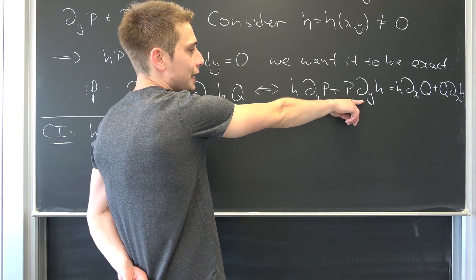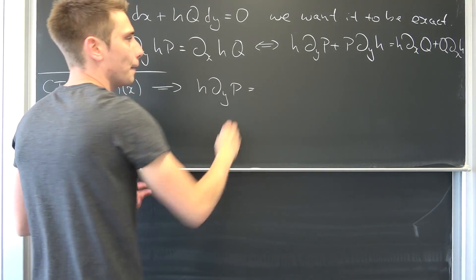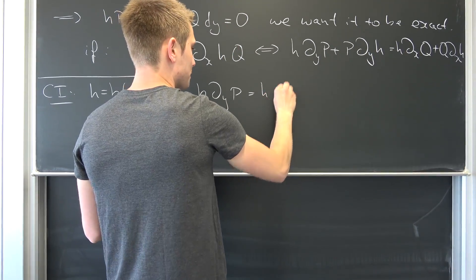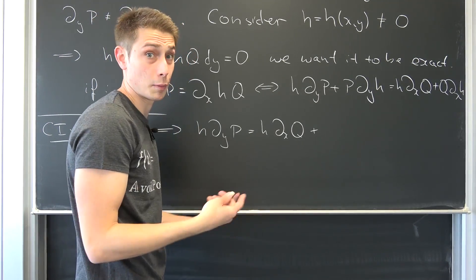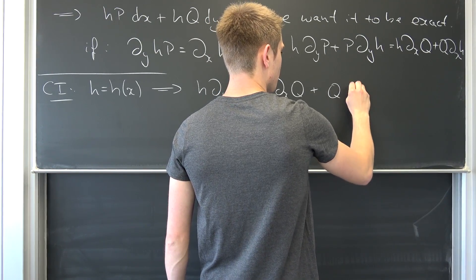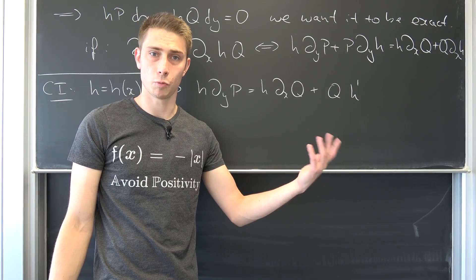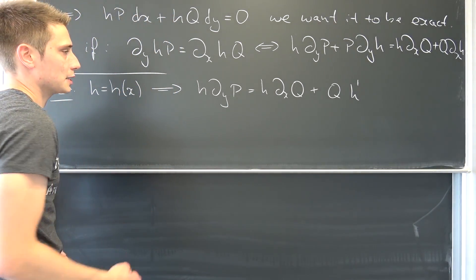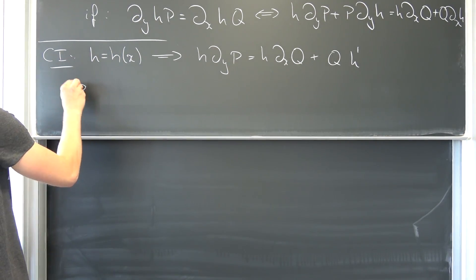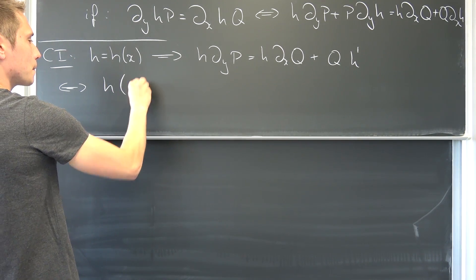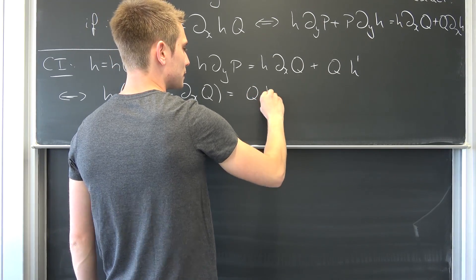If we differentiate H with respect to y, this is going to vanish. So on the left hand side we are going to have H times del_y P being equal to H times del_x Q plus — and H of x differentiated with respect to x is just H prime — Q times H prime. Now what we can do is use separation of variables. I would like to subtract this term on both sides and factor out the H. So we are going to have H times (del_y P minus del_x Q) equals Q times H prime.